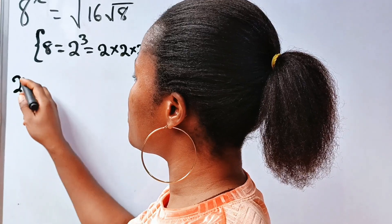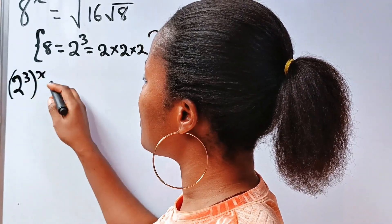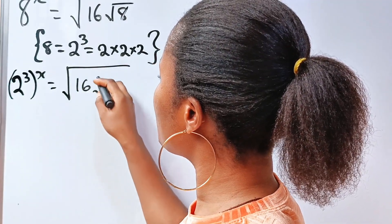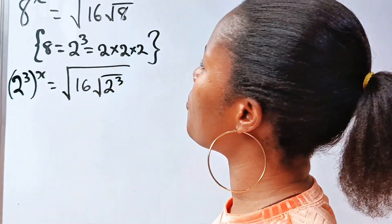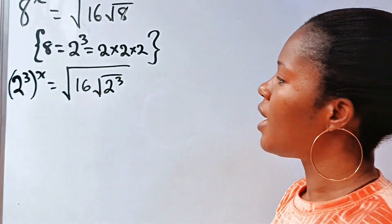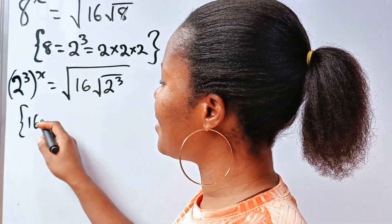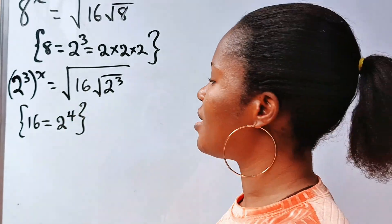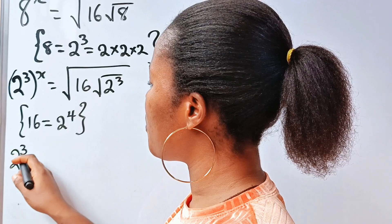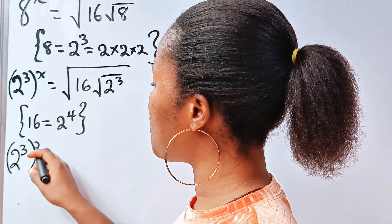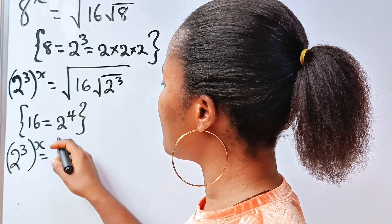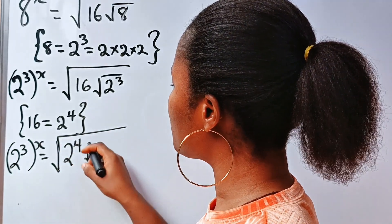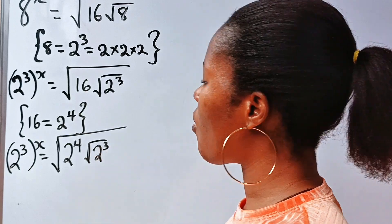So we write 2 to the power of 3, raised to the power of x, is equal to the square root of 16 times the square root of 8. Now, 16 is 2 to the power of 4, so we write 2 to the power of 3 raised to the power of x is equal to the square root of 2 to the power of 4 times the square root of 2 to the power of 3.